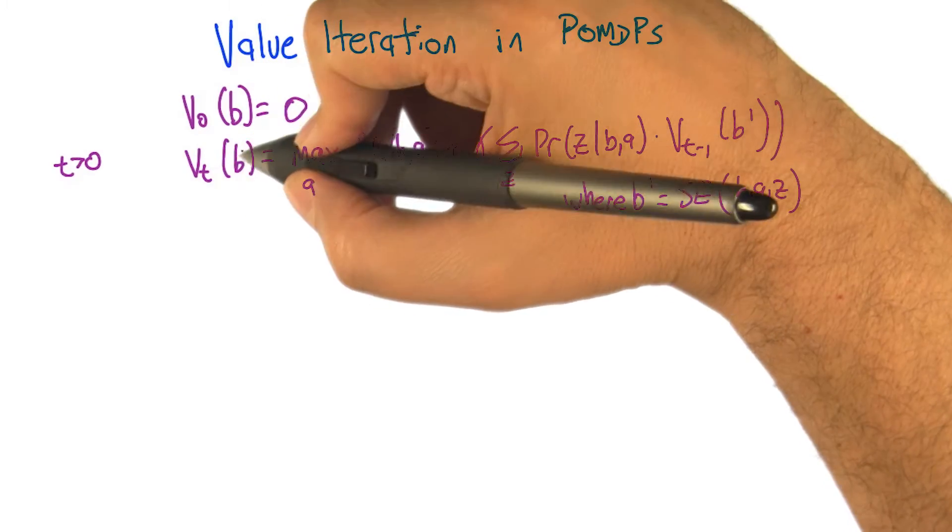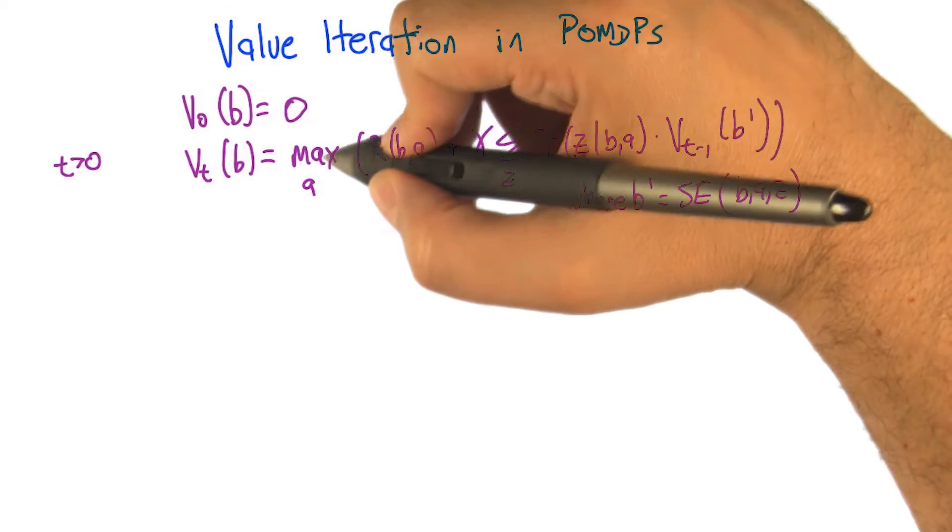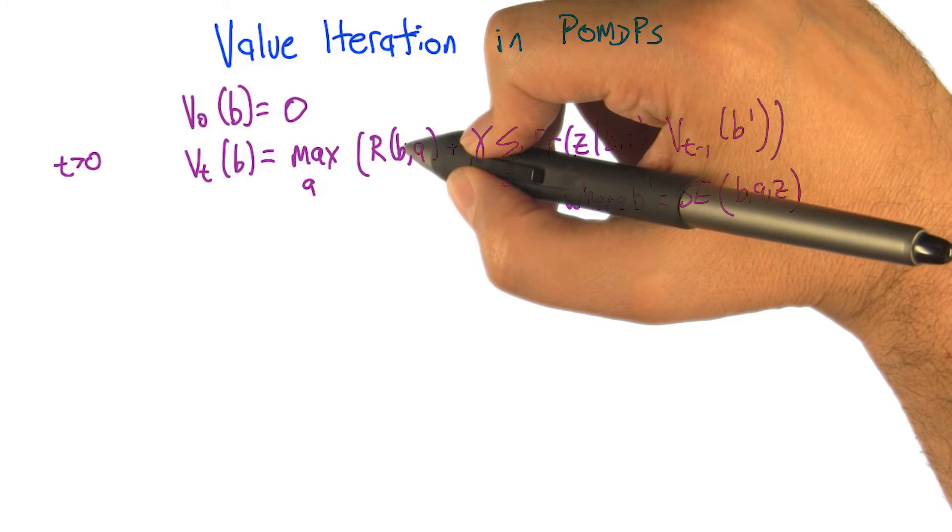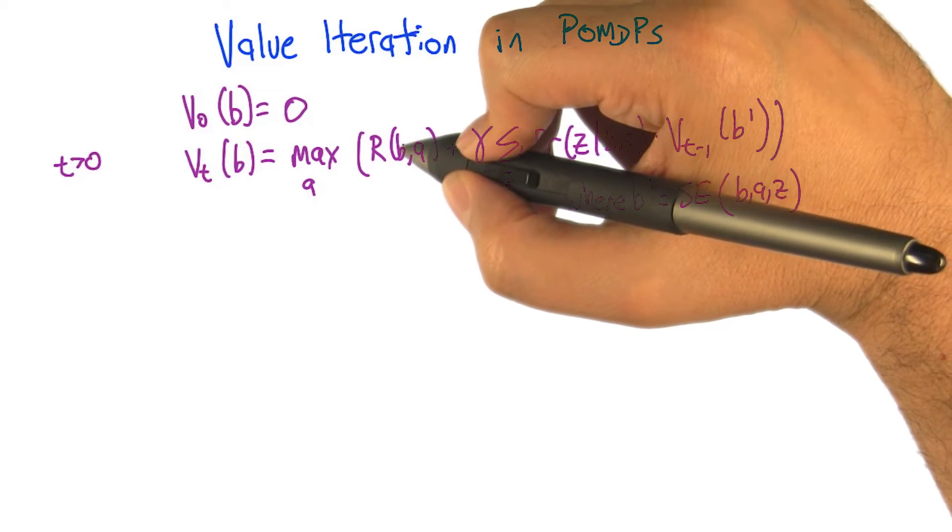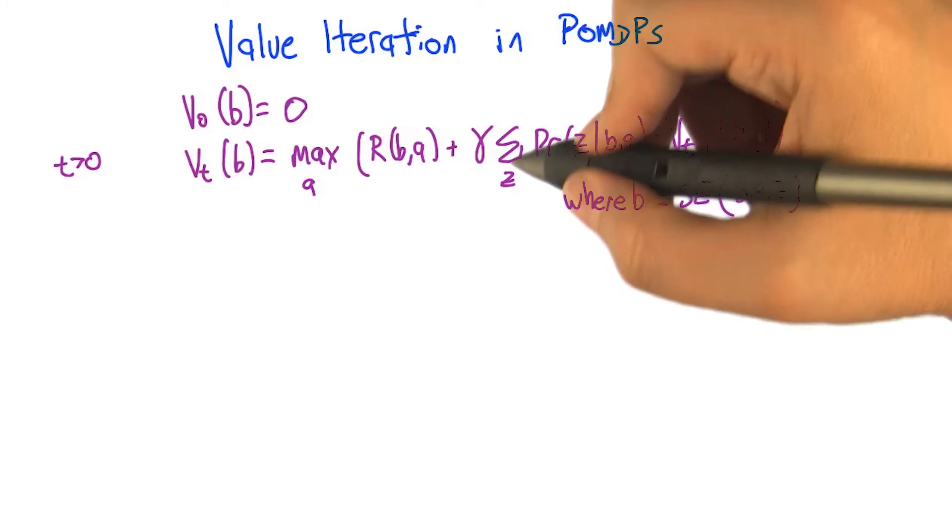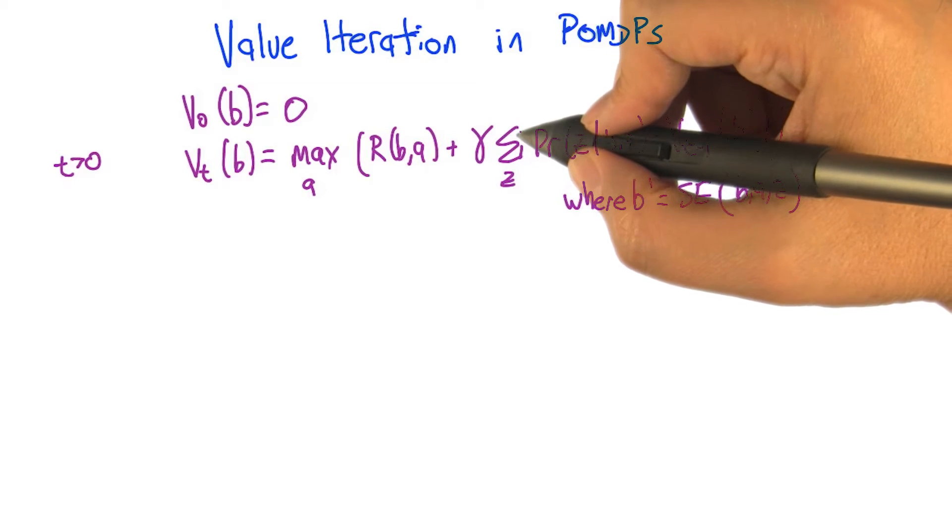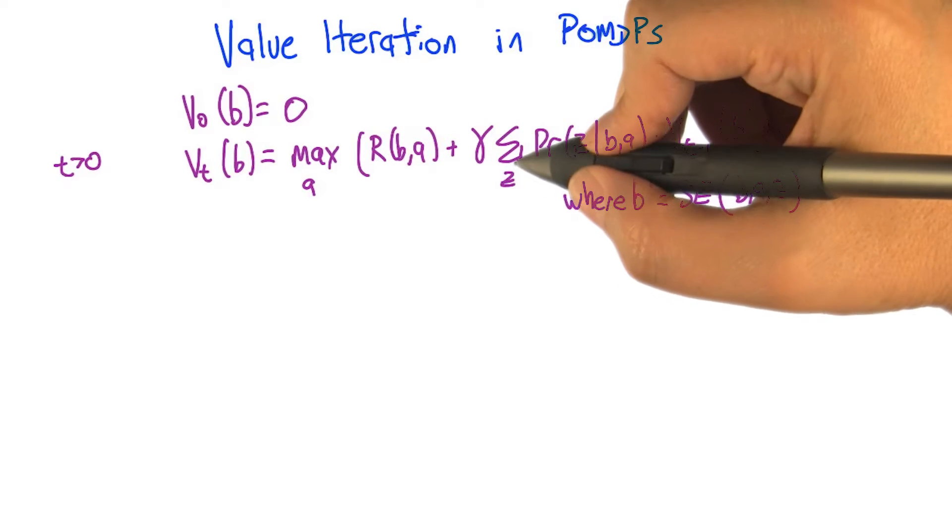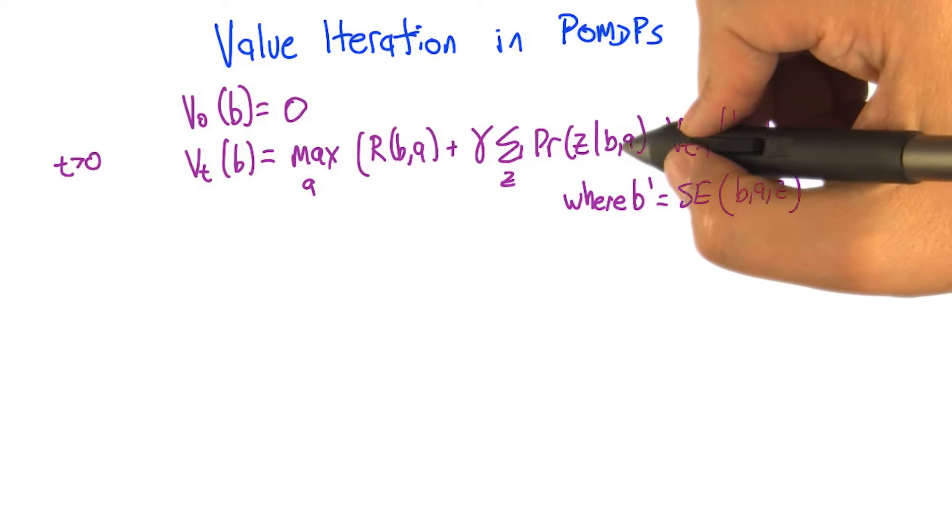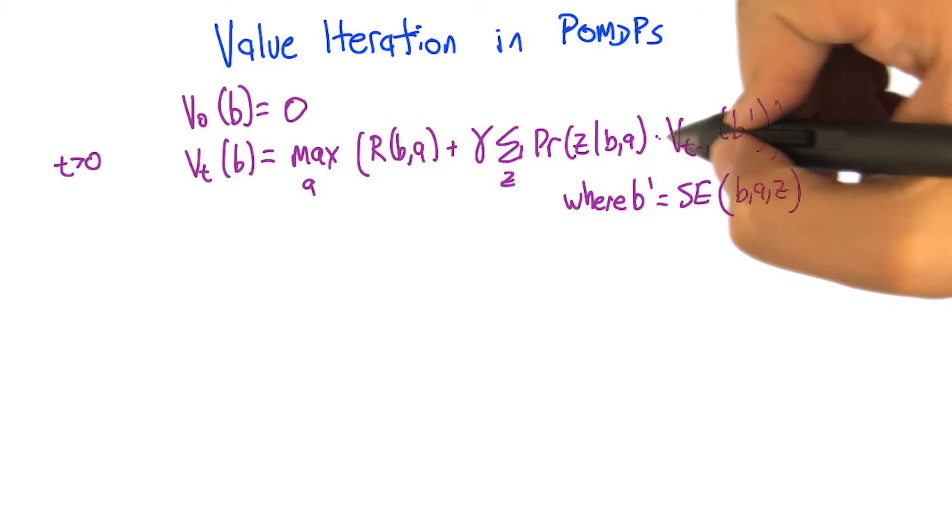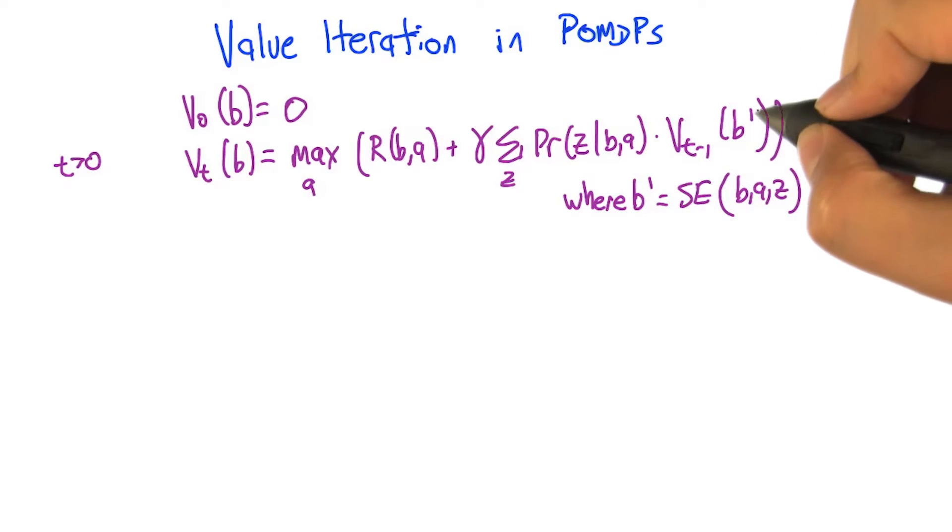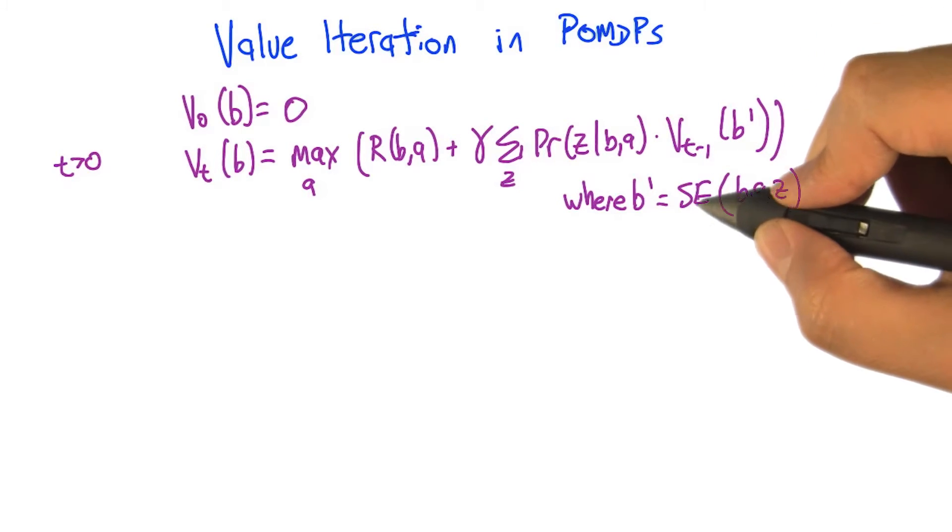the value function for time step t as a function of the belief state b is going to be the max over all actions, the reward for taking that action in the context of that belief state, plus the discounted expected value of where we end up. So what we're going to observe is an observation z, so let's sum over all the possible observations, the probability that we make that observation times the value function at the previous time step for the resulting belief state b prime,